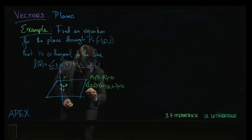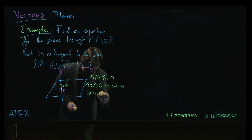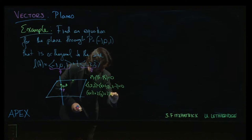Expanding the dot product. x plus 1 plus 2 times y plus 2 times z minus 1 equals 0.